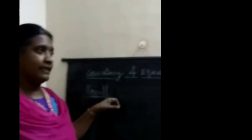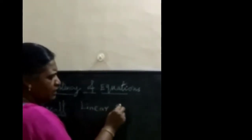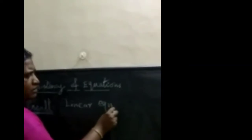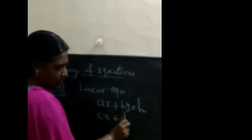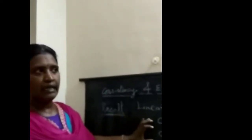Before that, we want to recall what you learned at the standard level. So, a linear equation means a system of equations with two variables. For example: Ax plus By equal to H, and Cx plus Dy equal to K. This is a linear equation.